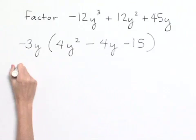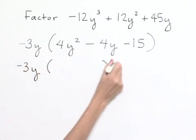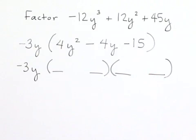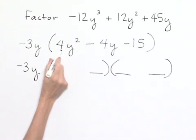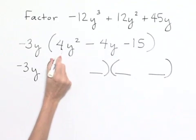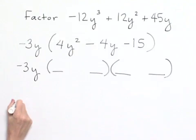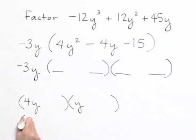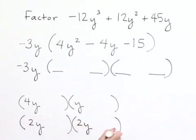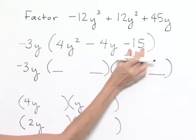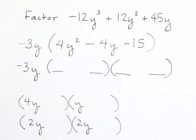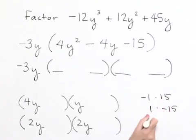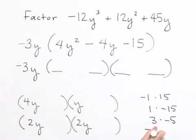We're going to need to factor this so we end up with a product of two binomials. We need to decide what values will go into these blanks by looking at our various combinations. For 4y squared, we could have 4y multiplied times y, or we could have 2y multiplied times 2y. For our last term of negative 15, we could have negative 1 times 15, 1 times negative 15, 3 times negative 5, or negative 3 times 5.